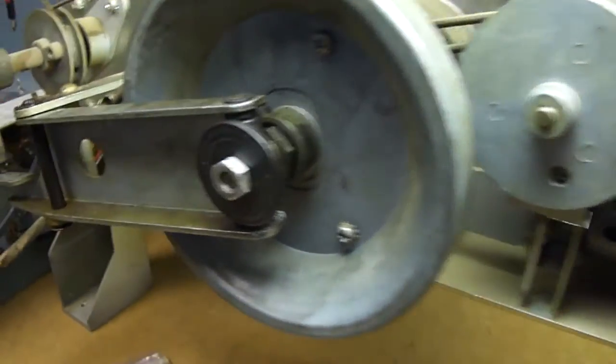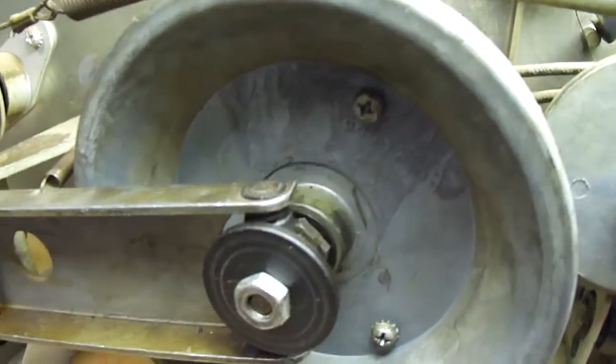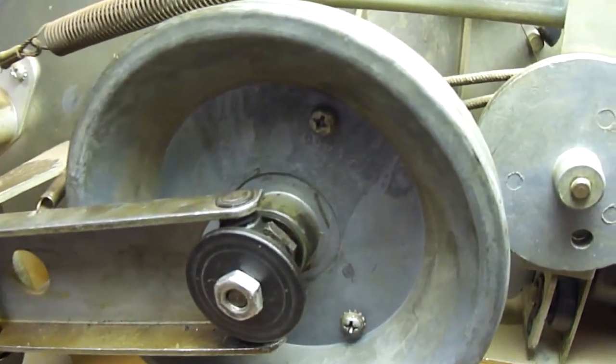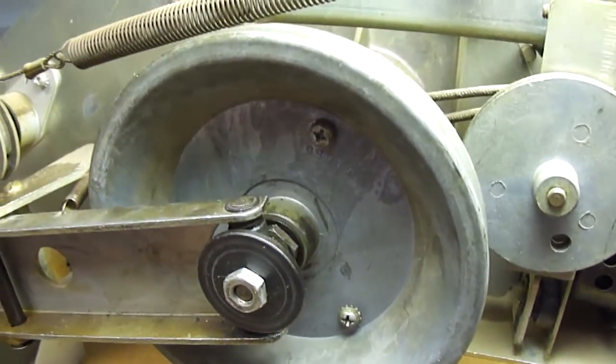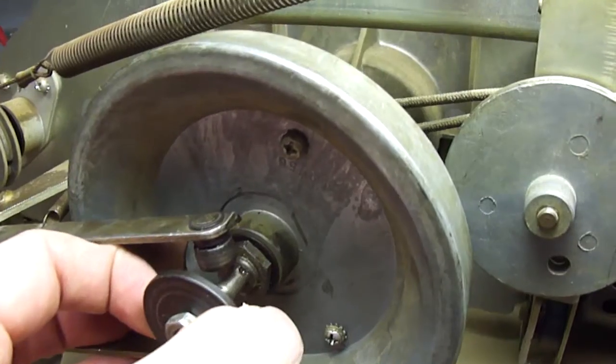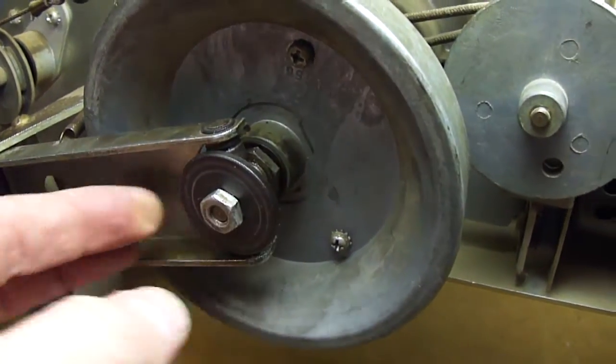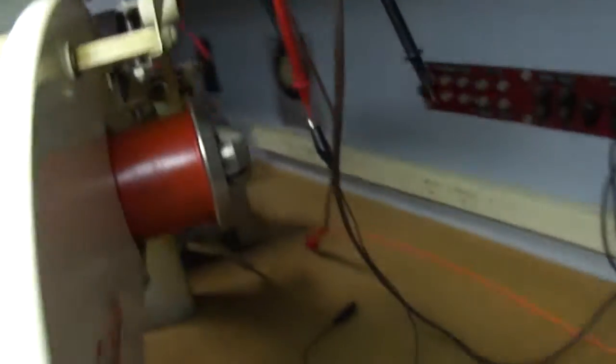So I took the entire thing apart, I ground down that shaft gently using a sanding disc, and then I re-lubricated it, and I got all those burrs and stuff off, and now it seems to work like it should.